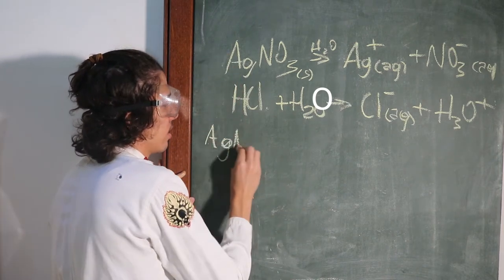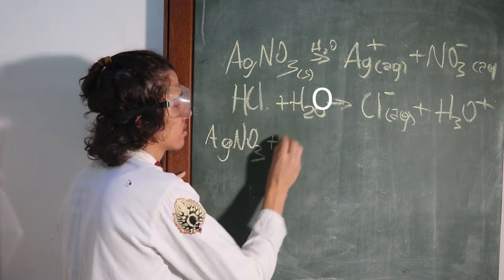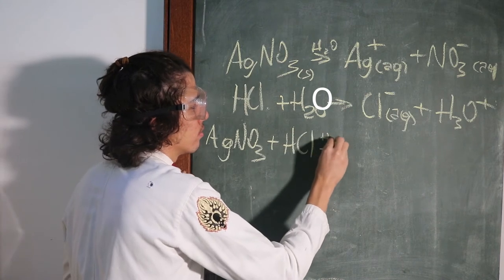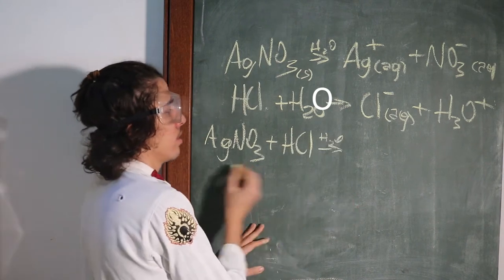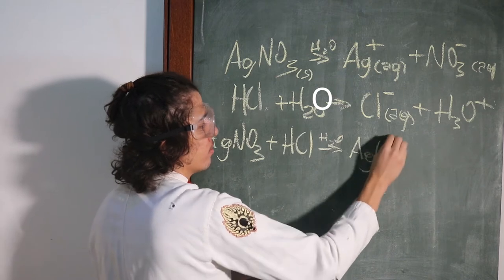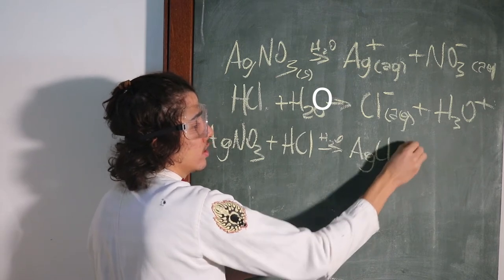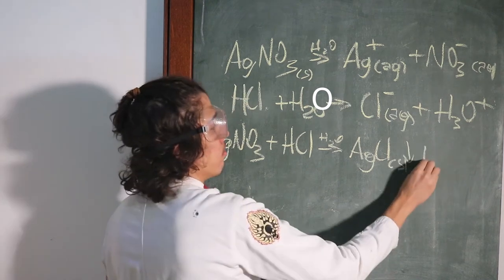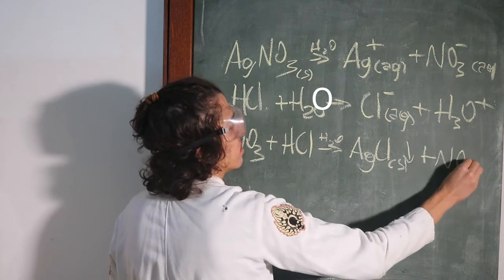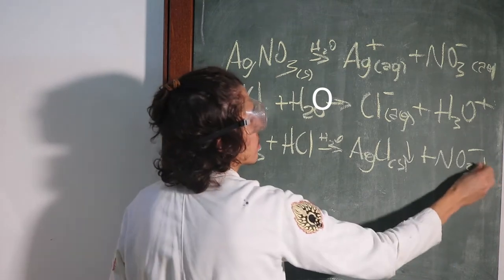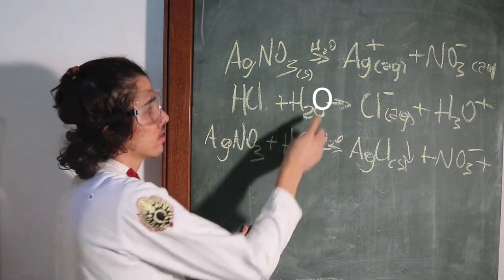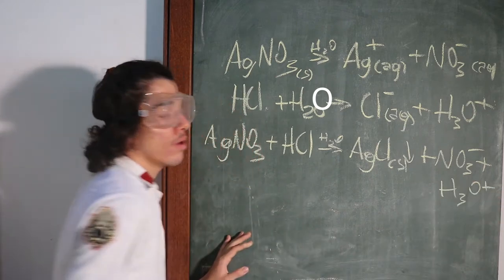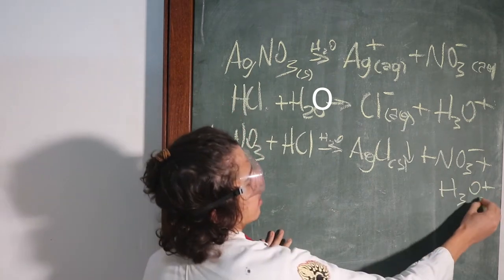Let's get to the equation. So the equation is going to be pretty simple. Taking this in our minds, the equation is going to be AgNO3 plus HCl in water, you're gonna get AgCl, it's a solid, so it precipitates as the question says.